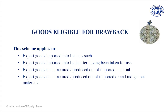Section 75 has three types of drawbacks, and the most important is goods manufactured out of imported material. In the Section 74 cases, goods were not manufactured — you imported goods and re-exported them. Under Section 75, the essential qualification is that goods must be manufactured. You import goods, use them in an item which will be exported out of India, and claim refund of taxes paid at the time of import.